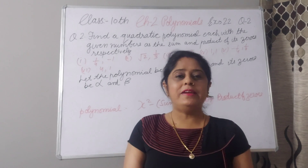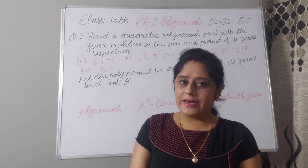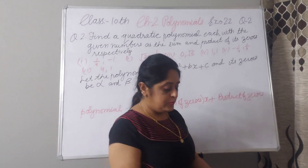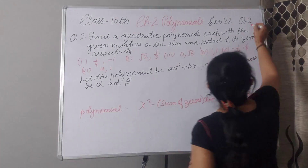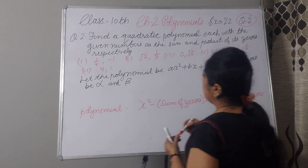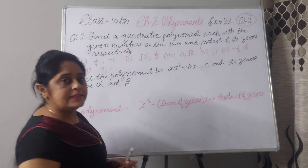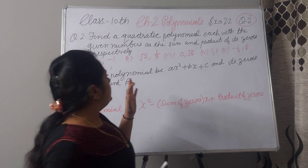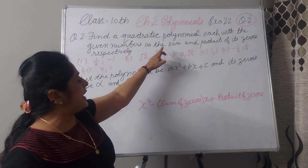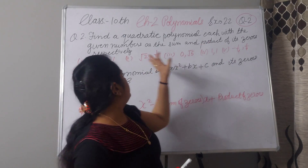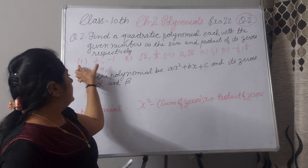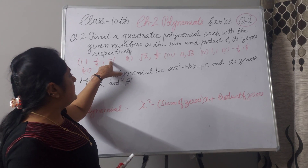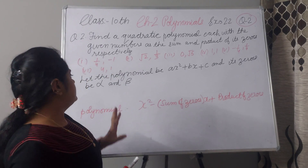Hello everyone, today I will explain for class 10th, chapter 2, exercise 2.2, question number 2. I am reading the statement — listen carefully. Find a quadratic polynomial each with the given numbers as sum and product of its zeroes respectively. There are 6 parts: the first part gives sum of zeroes and the second part gives product of zeroes.